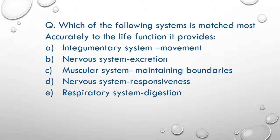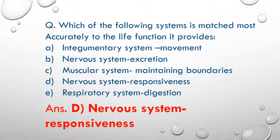Which of the following systems is matched most accurately to the life function it provides? Integumentary system provides protection, nervous system is the control system, muscular system maintains posture and generates heat, nervous system is responsible for responsiveness, and respiratory system provides oxygen and removes carbon dioxide. The correct answer is nervous system responsiveness.